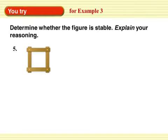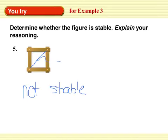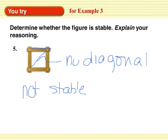Alright, determine whether the figure is stable. Explain why. Okay, I'll do this one with you. Not stable. Why, you may ask? Because there is no diagonal support. If you think I can move this back and forth, all these sides would stay the same length. I can make a rhombus, I can make a really flat rhombus, where all of those sides are the same length, but my quadrilateral changes.